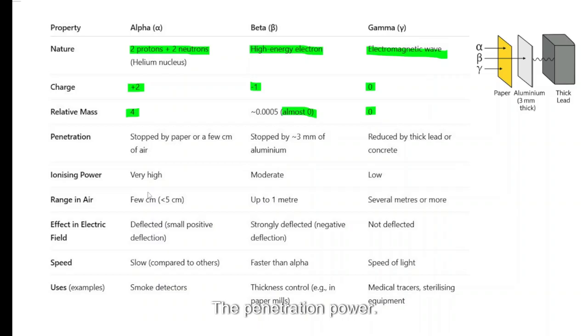The penetration path, alpha radiation is stopped by a paper or few centimeters of air. So usually you can call about five centimeters of air. You can see it on the diagram on the right hand side. Alpha particle cannot penetrate the paper.